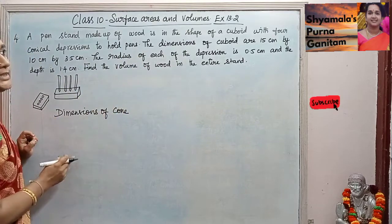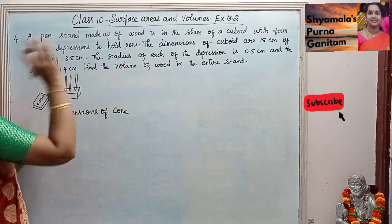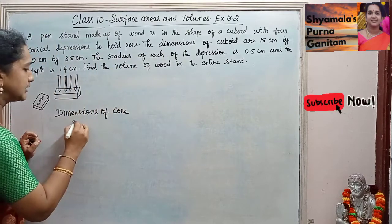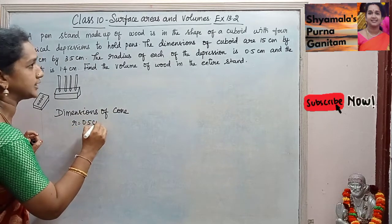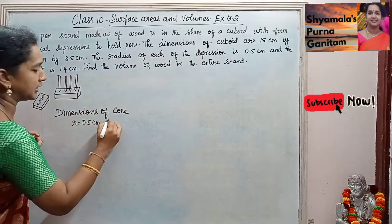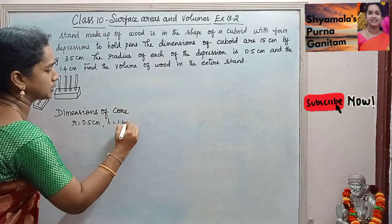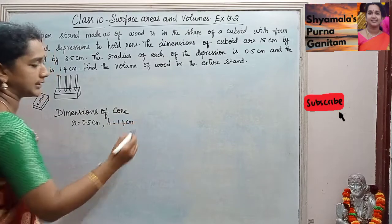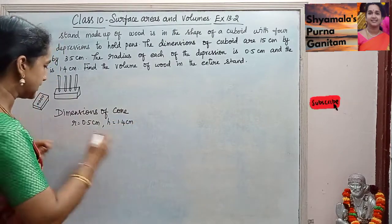The dimensions of the cone: the radius r is equal to 0.5 cm. Depth means height, so height is 1.4 cm.